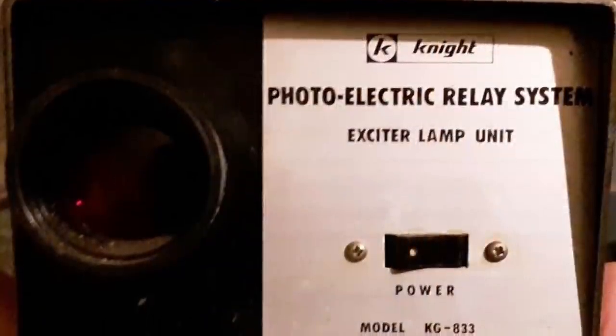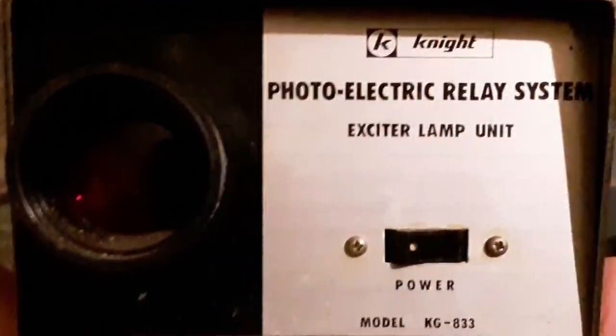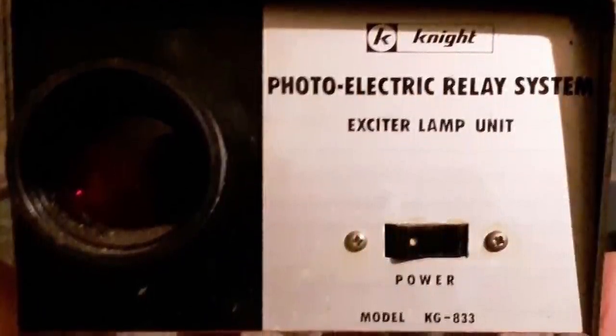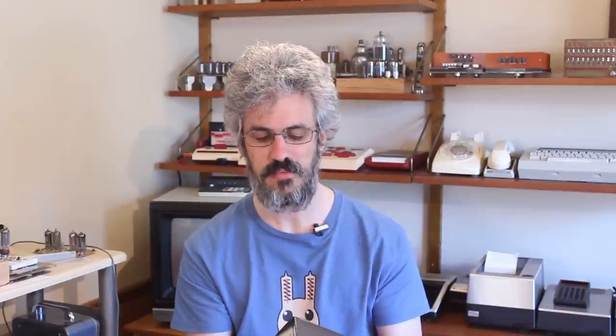It is a Knight photoelectric relay system, and this is the receiver unit. I believe that there is another unit called the exciter unit, which I think is just essentially a light bulb, but I didn't see it there and so I don't have it. All I've got is the receiver unit, but this in and of itself is still very, very cool. So I want to put it on the bench, show you guys what exactly it is that it does, and then we'll take the case off of it and see if we can't figure out how it works on the inside.